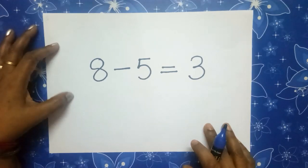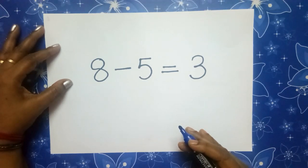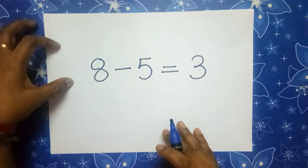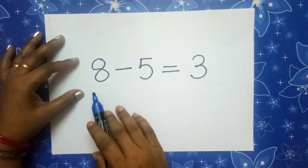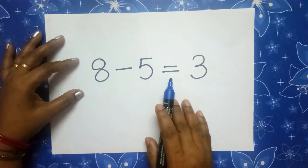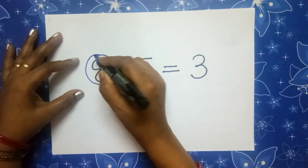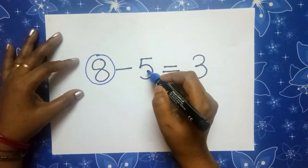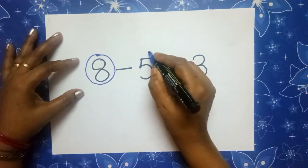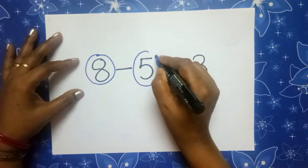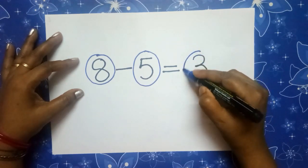Subtraction means taking away. The number being subtracted is called the subtrahend. The number from which it is being subtracted is called the minuend. And the result is called the difference. For example, 8 minus 5 is equal to 3. So this number 8 is called the minuend, 5 is called the subtrahend, and the answer 3 is called the difference.